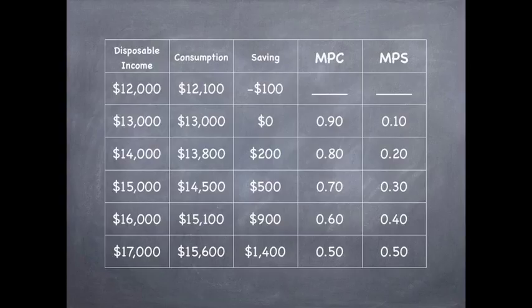Next, we have $13,000 for disposable income, $13,000 for consumption, and a savings of zero.